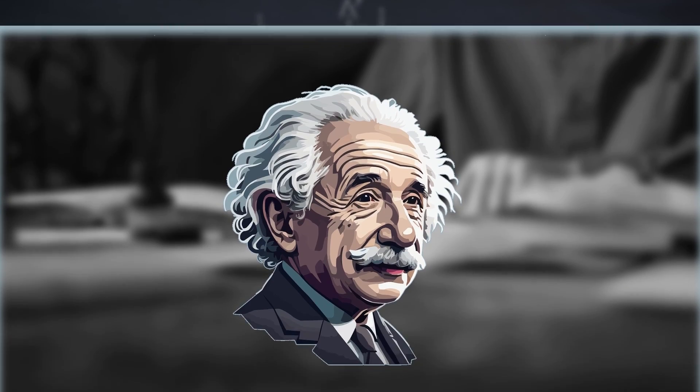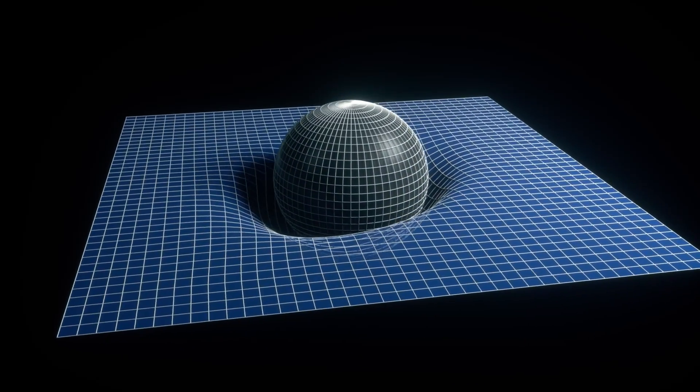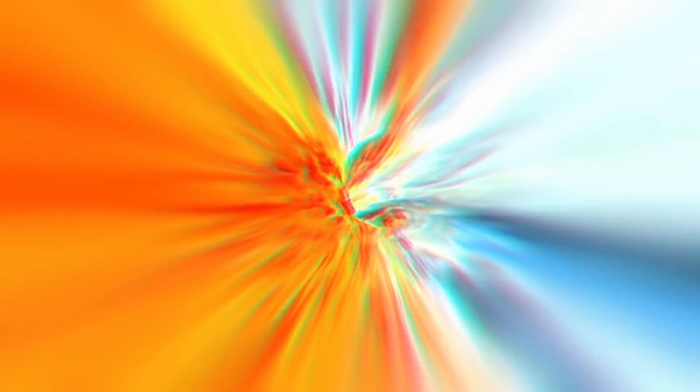Einstein used this premise in his special theory of relativity, where it played a crucial role in his thoughts about the geometry of space-time and the influence of gravity and velocity-related factors on the flow of time.